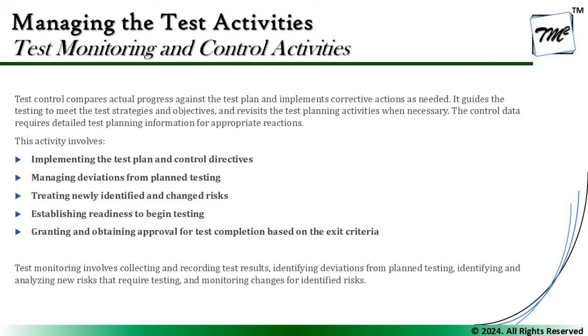Test monitoring and control are ongoing activities throughout the life cycle, starting right from the planning itself. Test control compares actual progress against the test plan and implements corrective action as needed. It guides testing to meet the test strategy and objectives, and revisits test planning activities when necessary. The control data requires detailed test planning information for appropriate reactions — the word 'appropriate' plays a very vital role here, because control actions are not predefined in advance; they depend on the situation.